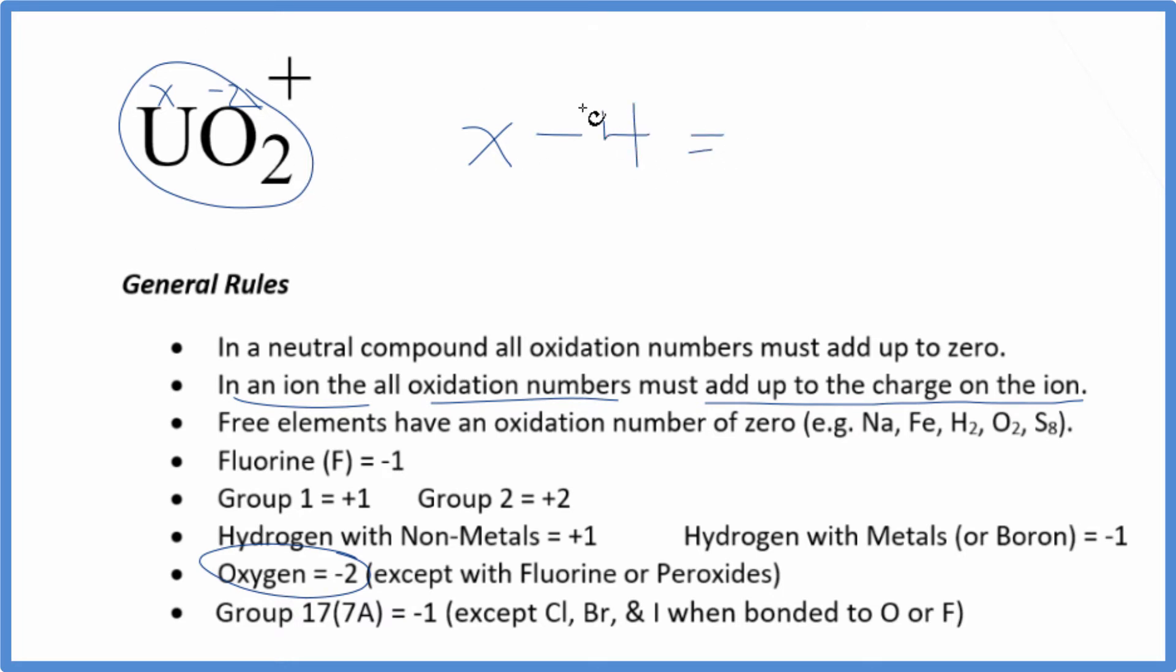So we have our equation. We add 4 to both sides, we have X equals a positive 5. So the oxidation number on the U in UO2 plus is going to be a positive 5.